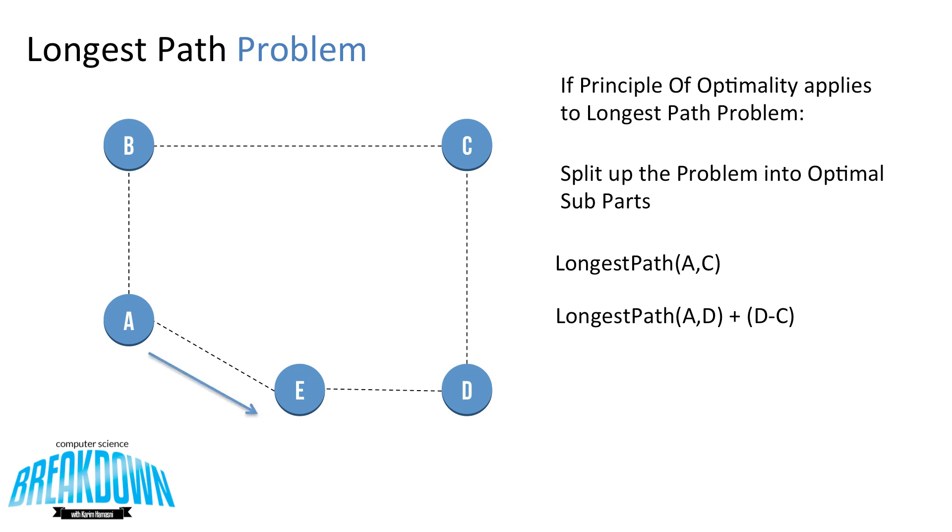So if we travel from A to E and then E to D, we'd notice that this is not the longest path from A to D. In fact, the longest path from A to D would be to travel from A to B, B to C, and then C to D.